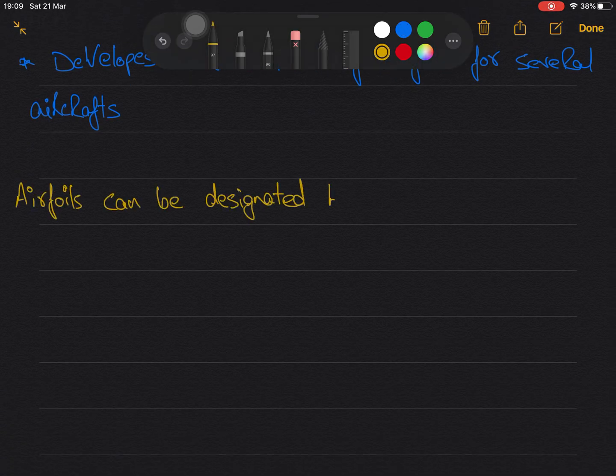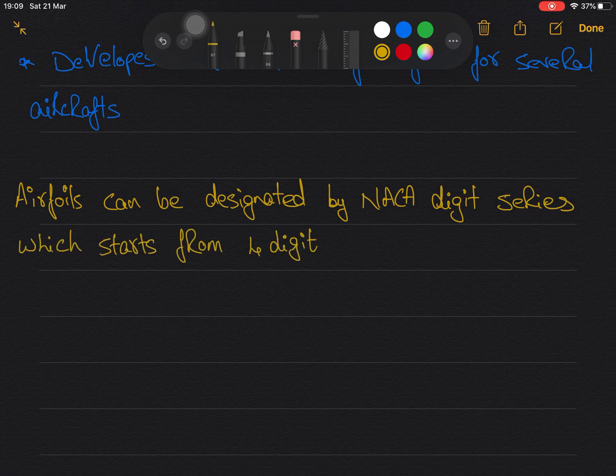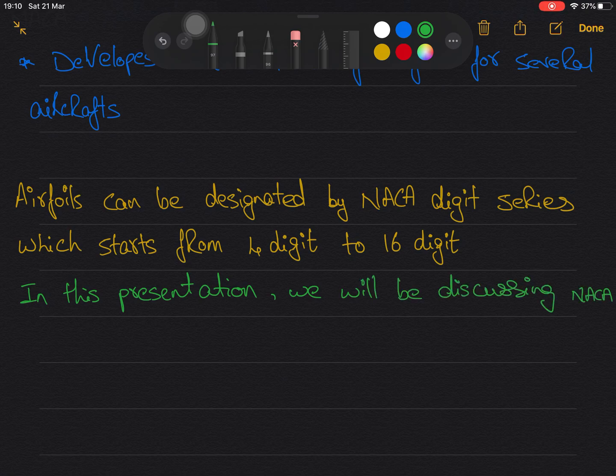NACA airfoils can be designated by NACA digit series which ranges from 4 digit series to 16 digit series, which has their own advantages, disadvantages and applications that we will be seeing at the end of the presentation.